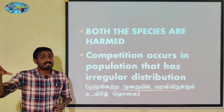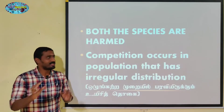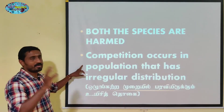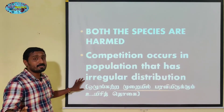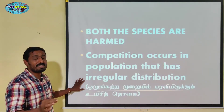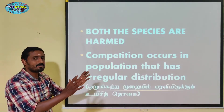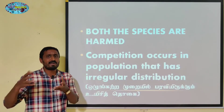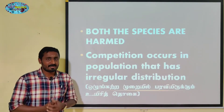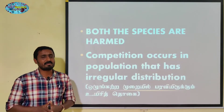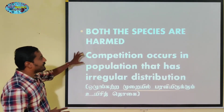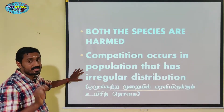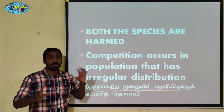The competition is related to the distribution of plants. Animals and plants in the same place compete for food, shelter, and water availability. When a population exists in irregular distribution in the same place, there is very severe competition.